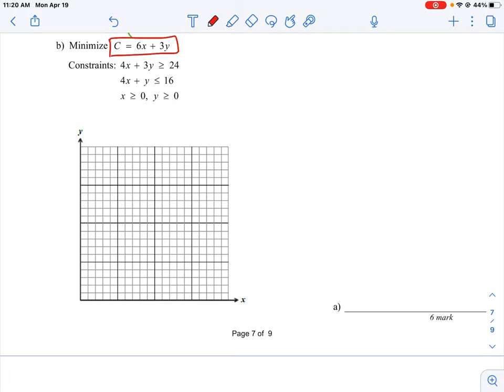This is similar to the first question where we need to plot these equations and see what shape or boundary values we have. We're being asked to minimize the cost, so we want to find the lowest value that fits those equations. We have 4x + 3y ≥ 24 and 4x + y ≤ 16, and we need to graph those equations.